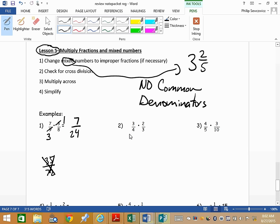So let's look at question number two. Do we have any cross division? And the answer is yes, we've actually got it in both locations. So let's check the four and the two. Who fits into four and into two? Well, two does. Two fits into two one time. Two fits into four two times. Who fits into three and into three? Yeah, three does. Three fits into three one time. Three fits into three one time. So now we just multiply across. One times one, one. Two times one, that's two. It is one half, we are done.